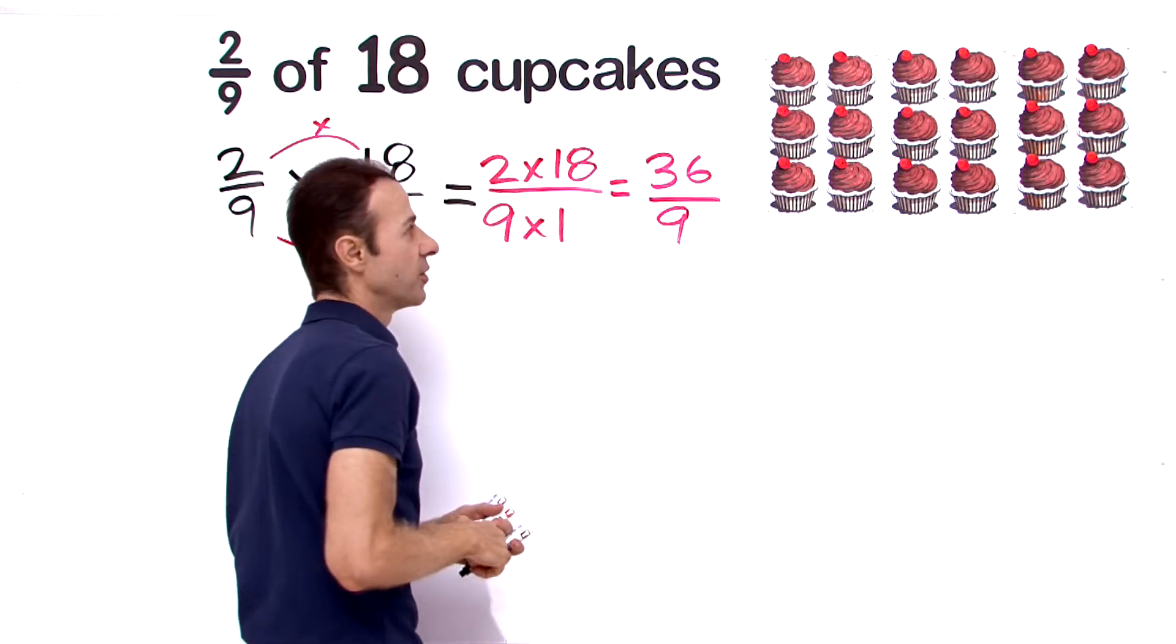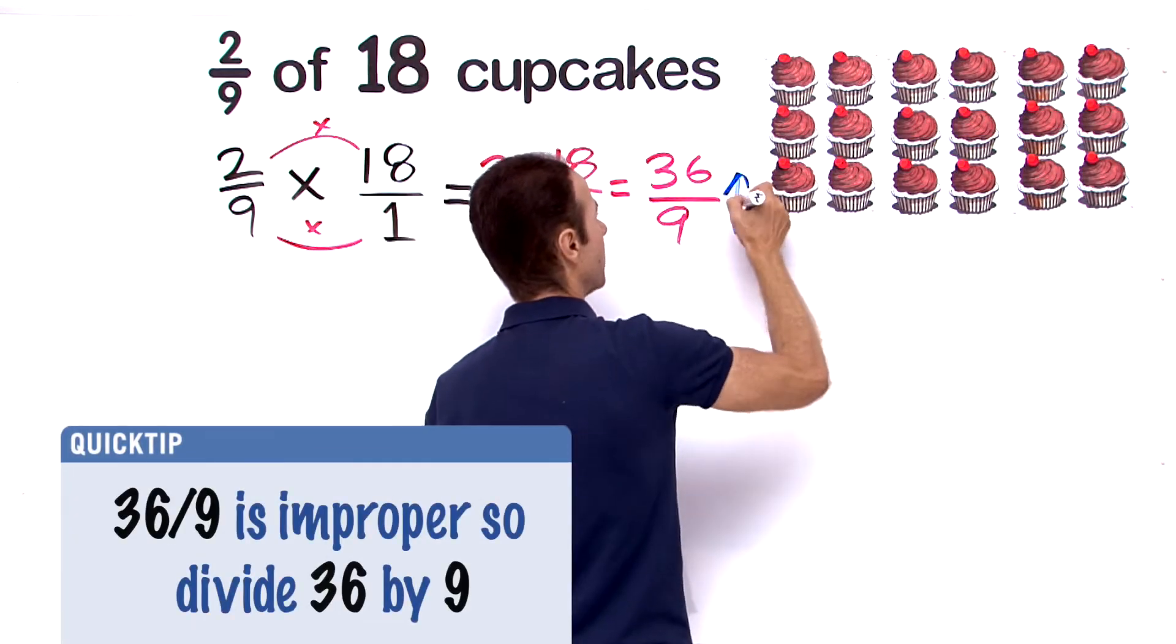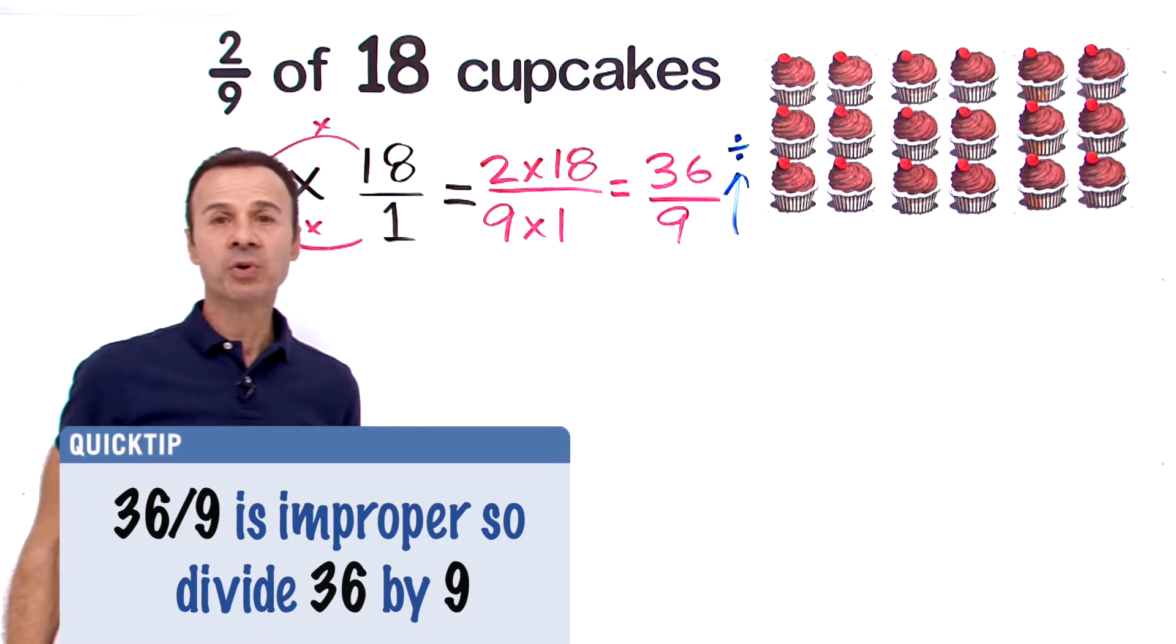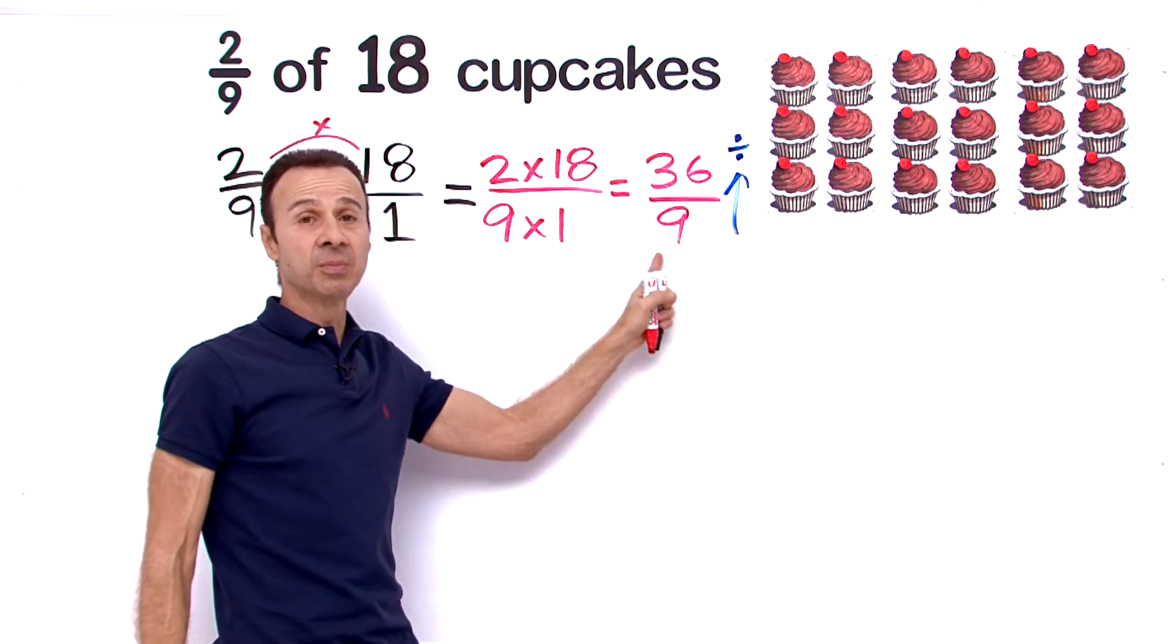Now 36 over 9—all we have to do is divide the bottom number into the top. Why do we do that? Because that's an improper fraction. Why? Because the top is bigger than the bottom.